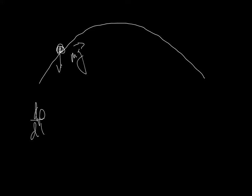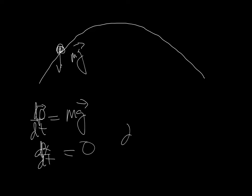If I have a ball flying through the air under the constant weight of gravity, and we look at the x and y components of momentum — dp/dt as a vector is going to be equal to the weight. dp_x/dt is going to be equal to the x component of the weight, which of course is zero, and dp_y/dt will be equal to the y component of the weight, which is going to be minus mg.